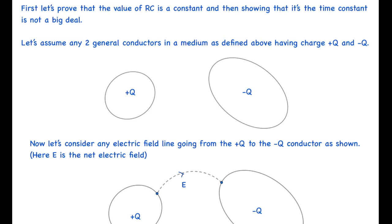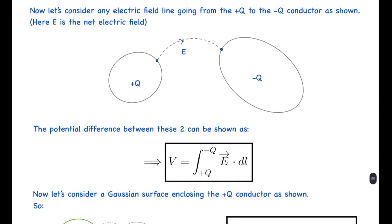Let's consider any electric field line going from the +q conductor to the −q conductor as shown. Here, E is the net electric field — meaning the effective electric field due to the conductors and the induced charges. The potential difference between the two conductors can be written as V equals the line integral of E·dl from +q to −q.